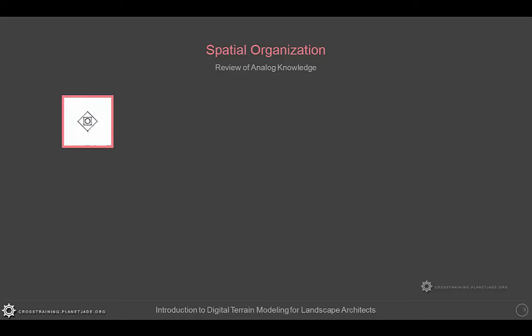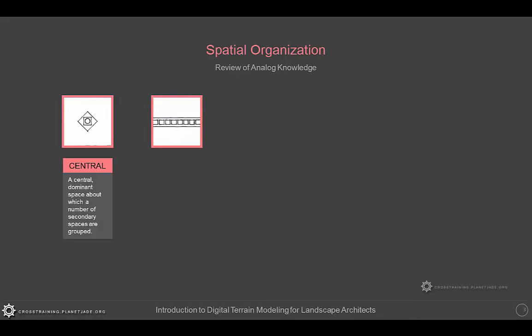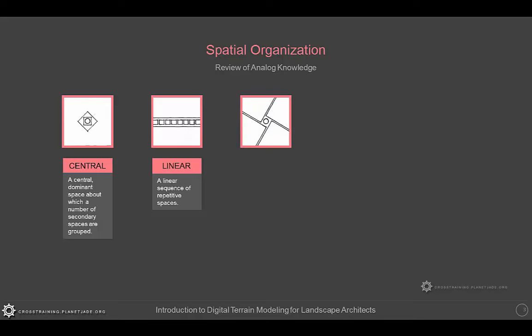The first one is called Central — a central dominant space about which a number of secondary spaces are grouped. The next one is Linear, which means there is a sequence of repetitive spaces, just as the definition says. The next one is called Radial, which is defined as a central space from which linear organizations of space extend outward in a radial manner.